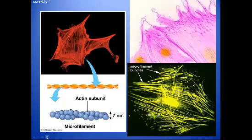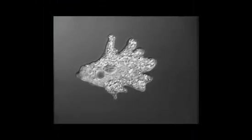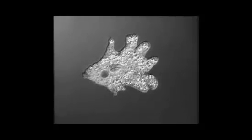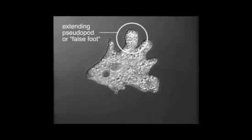Next is the microfilament — the smallest element of the cytoskeleton. It's made up of actin protein. It helps to support the cell shape, but mostly it's involved in cell movement. Here we'll see an amoeba moving in response to its surroundings using actin filaments. This single-celled amoeba crawls around by using actin polymerization to push out pseudopods, or false feet, to explore new territory.